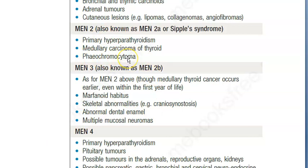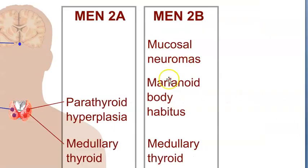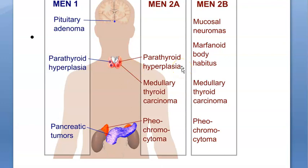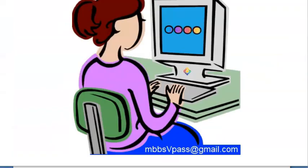There's no pituitary in MEN 2A; pheochromocytoma has been added instead of the pancreas, and thyroid is involved. MEN 1 and MEN 2A have something in common - that is parathyroid hyperplasia. Parathyroid hyperplasia is very common in both. But MEN 2A has thyroid and adrenal/pheochromocytoma, while MEN 1 has pituitary and pancreatic involvement.